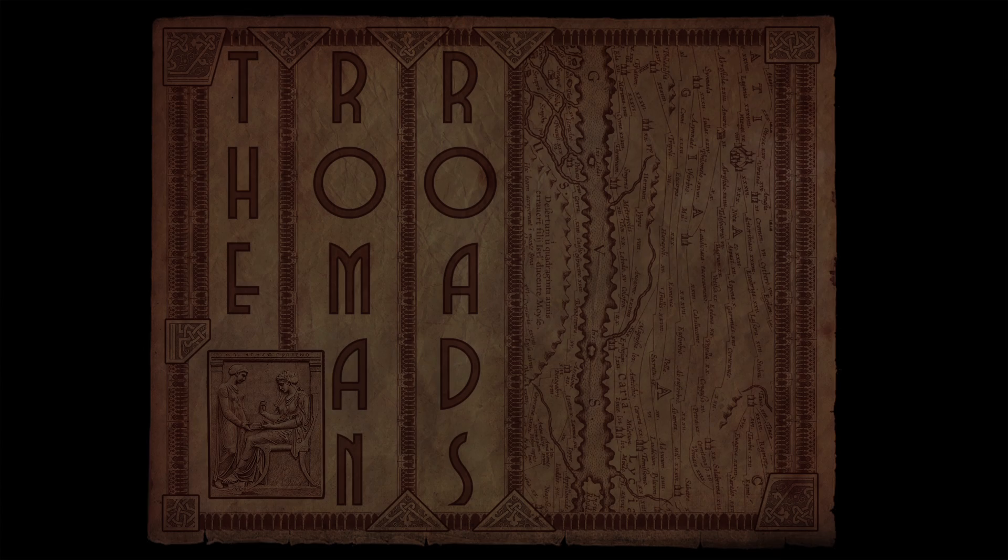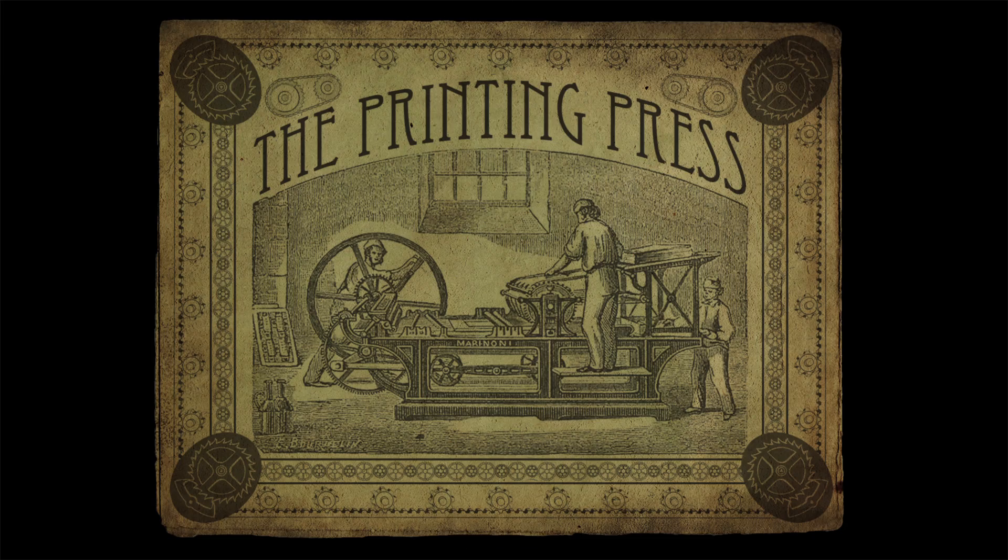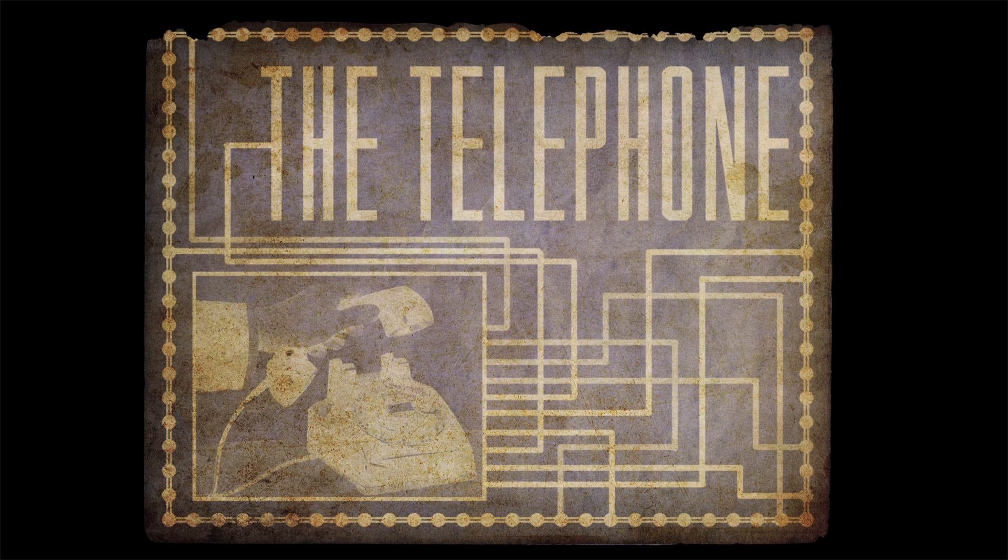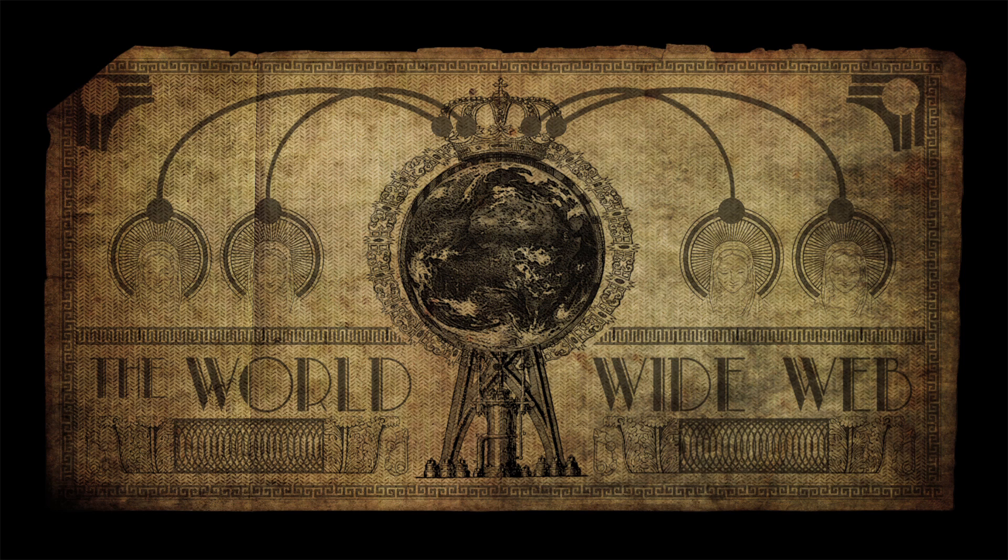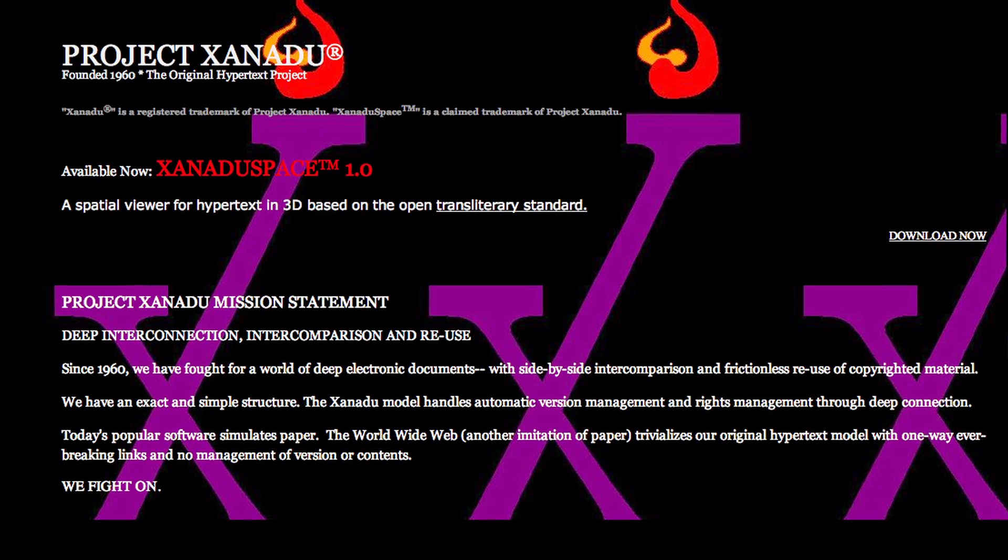It takes a particular type of visionary to get all excited about systems that connect all the information in the world. And so these are the kinds of people that do things like the World Wide Web, like the NLS in the 60s by Doug Engelbart, Ted Nelson, and the Xanadu vision.